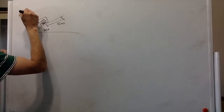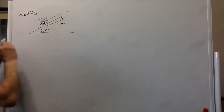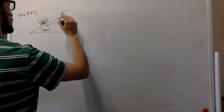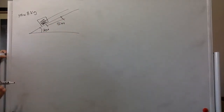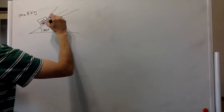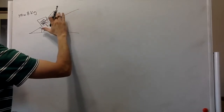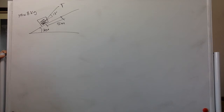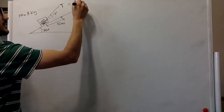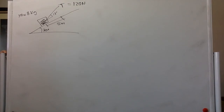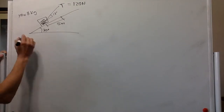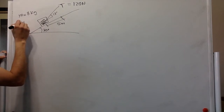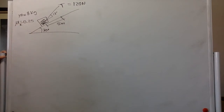So we have mass 8 kilograms. This is the angle that is parallel to the incline, and so the tension is going to be at an 18-degree angle from there. The tension in the rope is 120 newtons. The crate's coefficient of kinetic friction on the incline is 0.25. How much work is done by tension, by gravity, and by the normal force? That's part A.